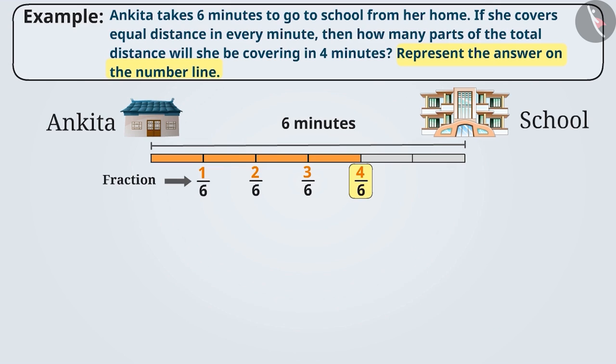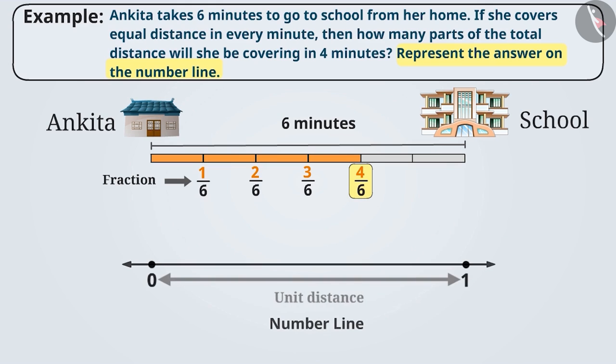Let me explain. In order to do this, first we will make a number line. Denominator of this fraction is 6, which tells us that there should be 6 equal parts of the unit distance. So let's make 6 equal parts of a unit distance.